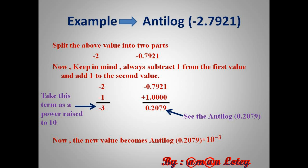The new value becomes antilog of 0.2079 × 10 raised to power minus 3. It means that after subtracting 1 from the first split value and adding 1 to the second split value, we get two new values. The first term is used as 10 raised to power, and the second term is used to find the antilog from the antilog table. So the new term becomes antilog 0.2079 × 10 raised to power minus 3, as shown.